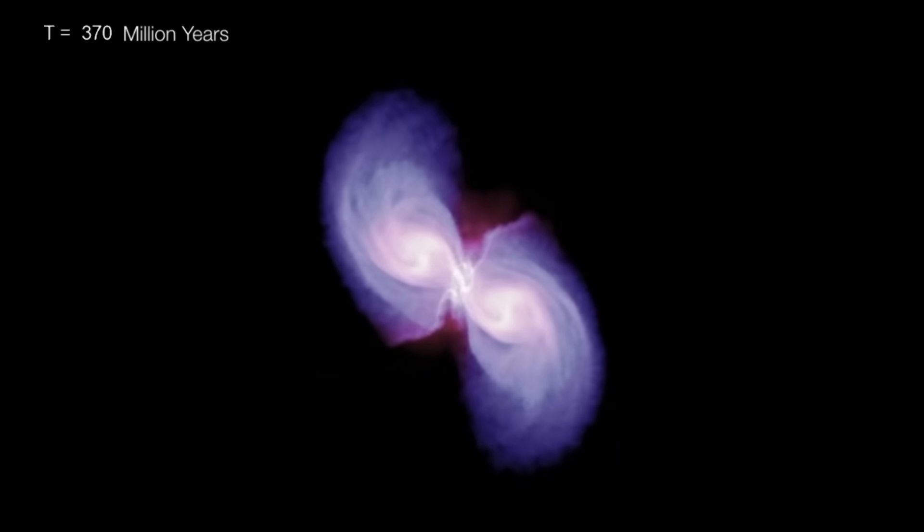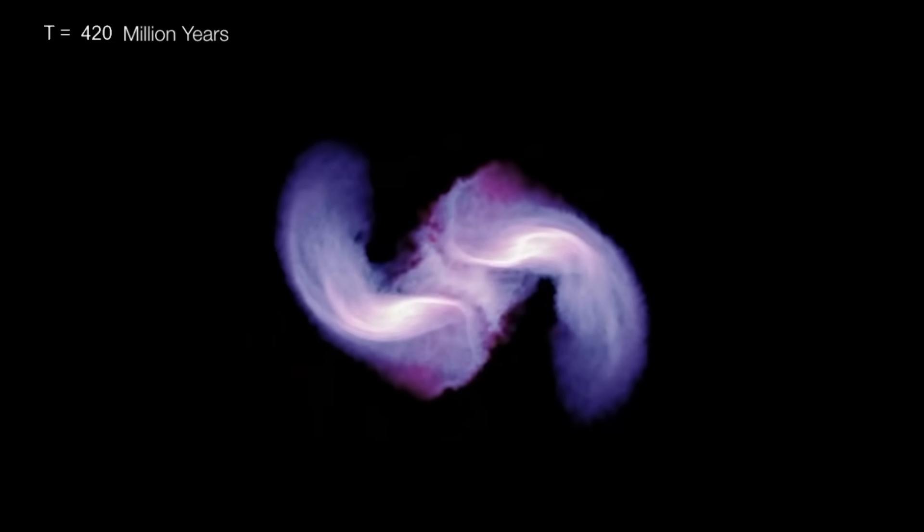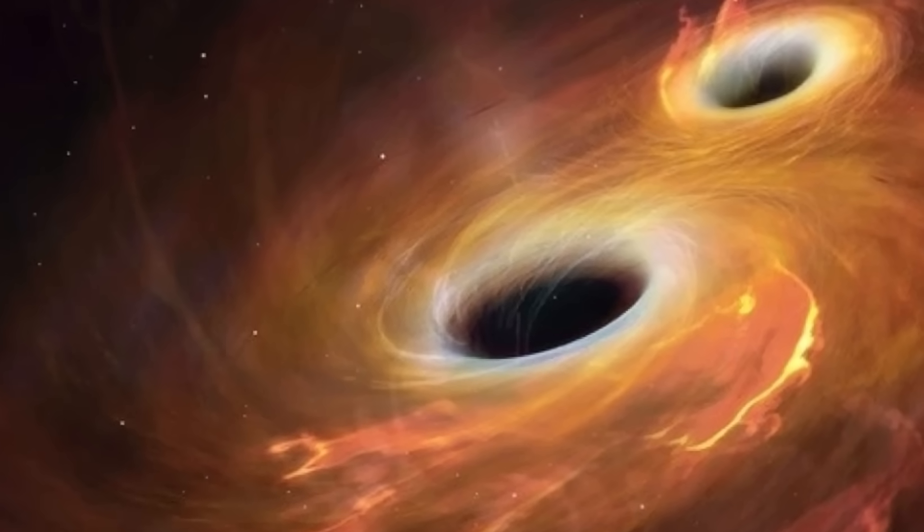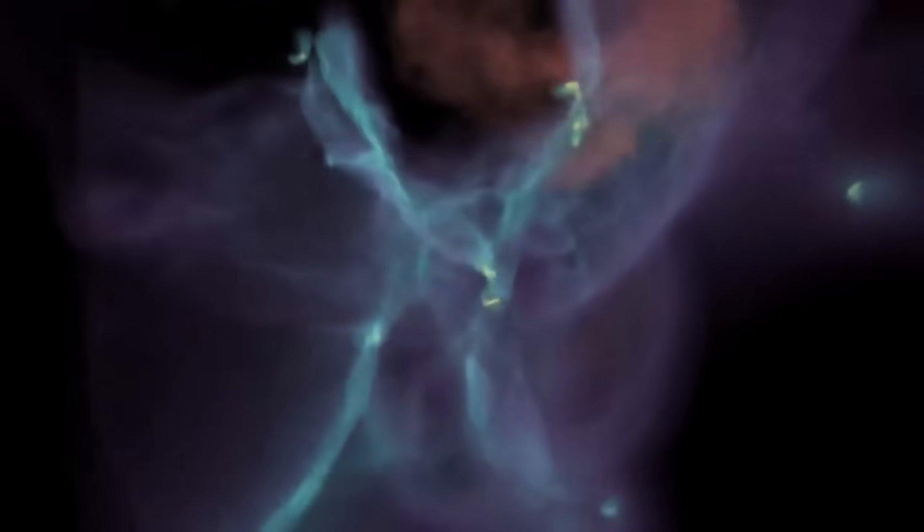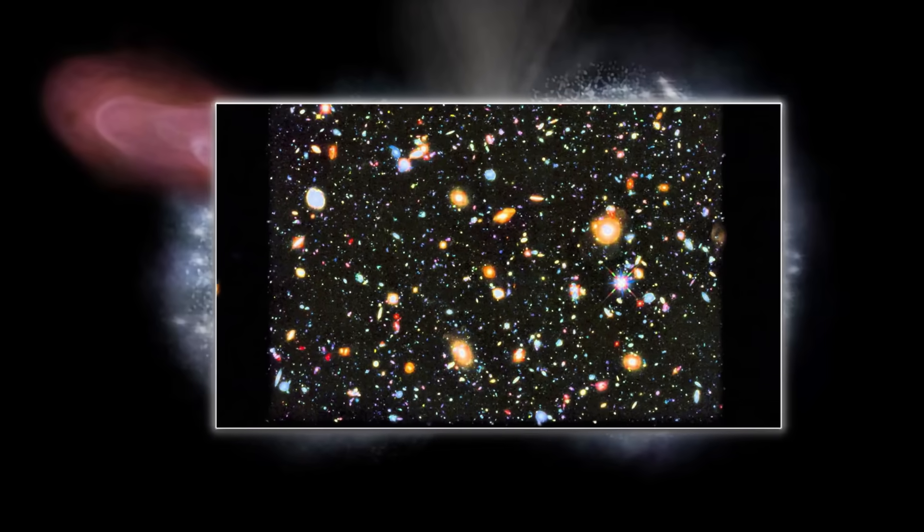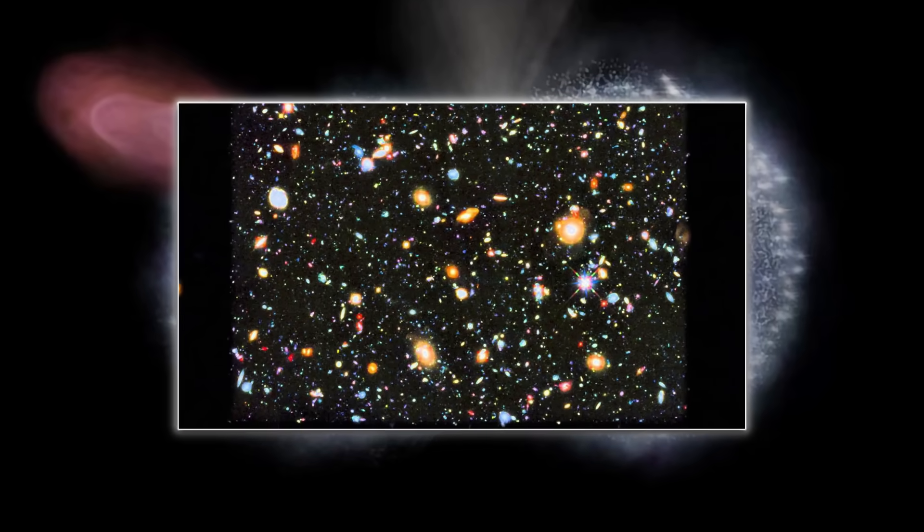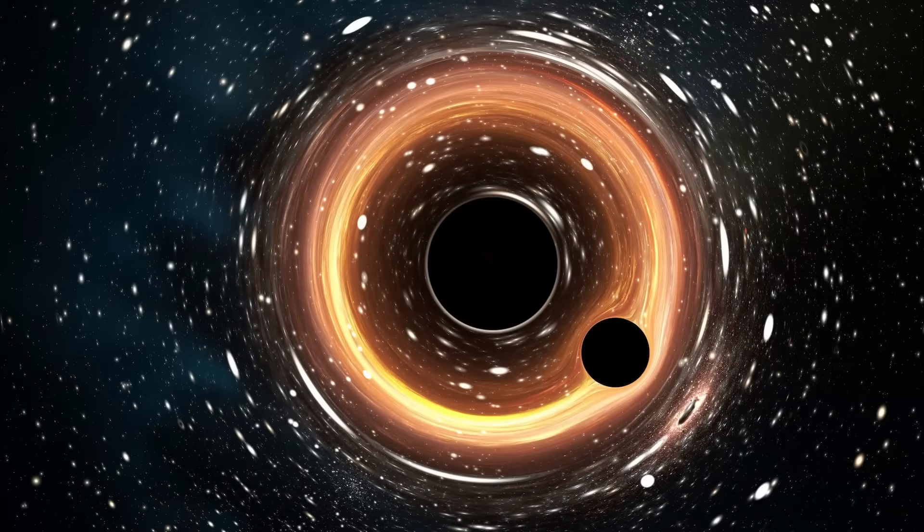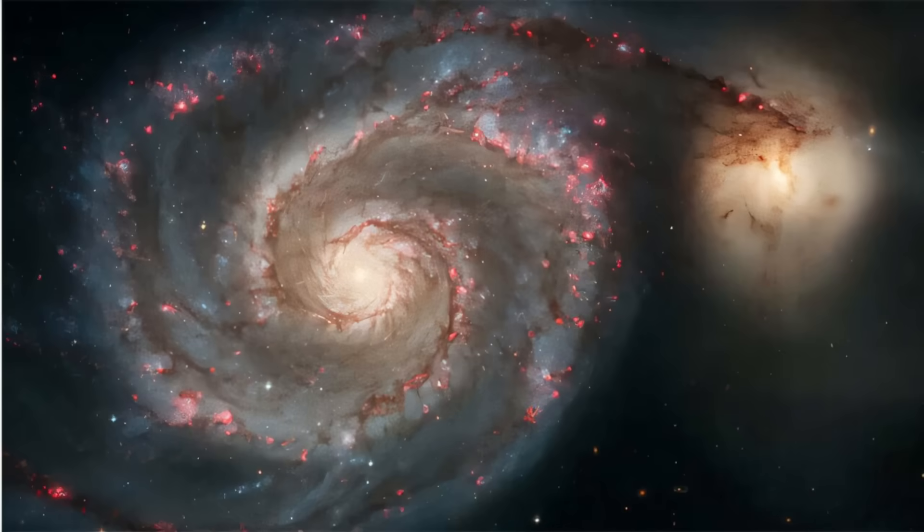The evidence points to a direct collapse origin. The black hole formed in place from the dense, shocked gas funneled by the merger, rather than being ejected or captured. Its presence, caught in the act by JWST's infrared eyes, offers a rare glimpse of how supermassive black holes might seed themselves in the chaos of galaxy assembly.